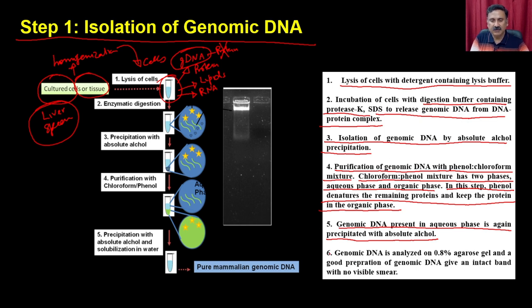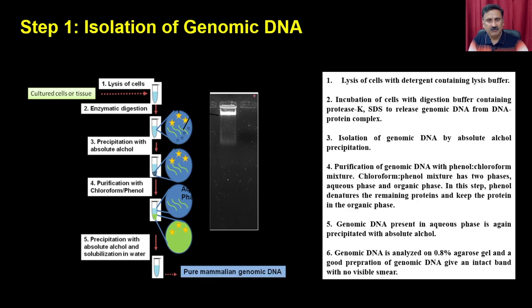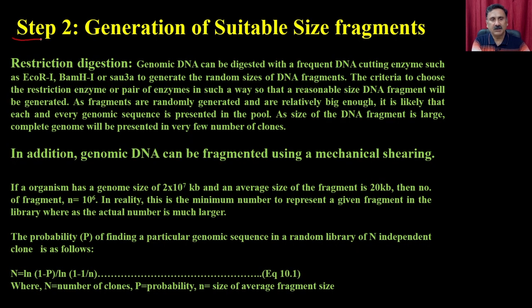Finally, analyze the genomic DNA on a 0.8% agarose gel. A good preparation will give an intact band with no visible smear. The genomic DNA band migrates very slowly because genomic DNA is very large.